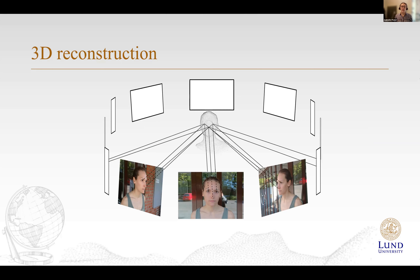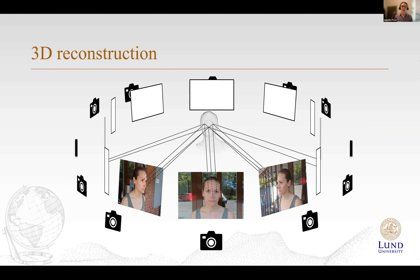If we have a lot of images taken from different viewing directions, we can create a 3D reconstruction of the object. And if we have enough images, we don't need to know the camera positions either — we can recover both the camera positions and the 3D reconstruction using only images.